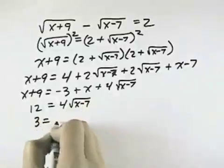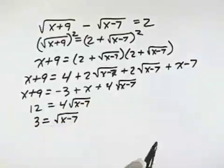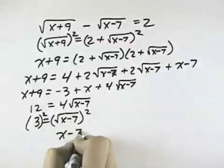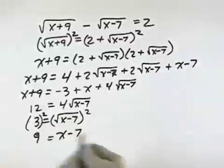Dividing by 4, I get 3 equals the square root of x minus 7. To get rid of this radical, I now square both sides again now that it's isolated, leaving just x minus 7 on the right and 9 on the left.